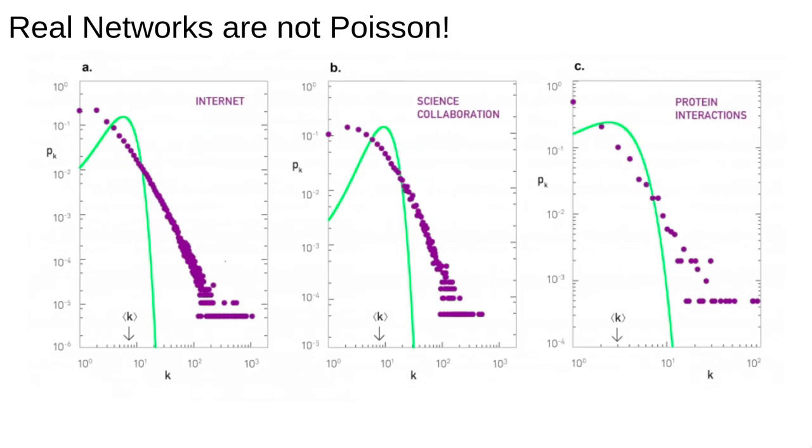It turns out that real networks are not random. Here are three examples taken from Barabasi's book, which is linked on the course webpage. Note that we're looking at the degree distributions now on a log-log plot. The first one shows the measured degree distribution of the network representation of the internet. Nodes are routers and links are internet connections.